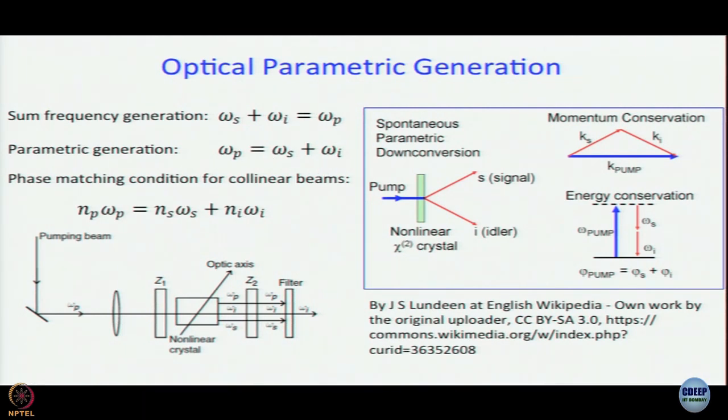In principle infinite number of combinations can be there, but in practice the number is limited. It is limited because not only does the energy have to be conserved, energy conservation is given by omega_p equals omega_s plus omega_i, but that's not the only condition. A very important condition is that momentum also has to be conserved. The moment we say momentum has to be conserved, you have only certain values that omega_s and omega_i can take.